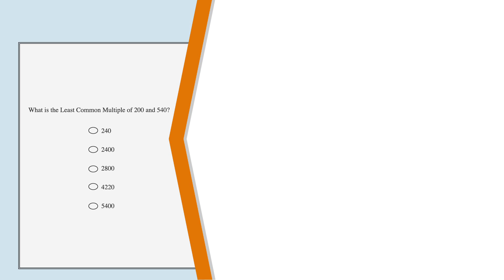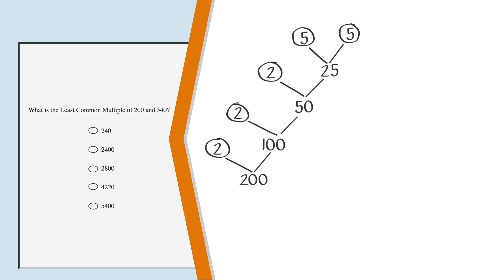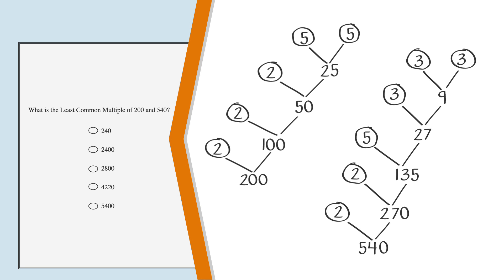On our scratch paper, we can divide by low prime numbers to factor 200 into 2 × 2 × 2 × 5 × 5. Also, by dividing by low prime numbers, we can factor 540 into 2 × 2 × 5 × 3 × 3 × 3.